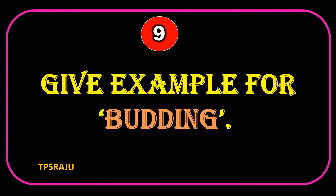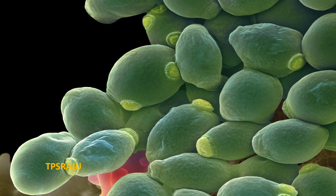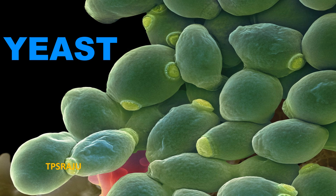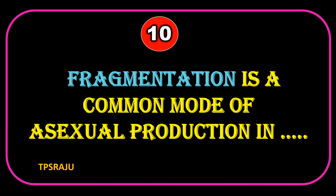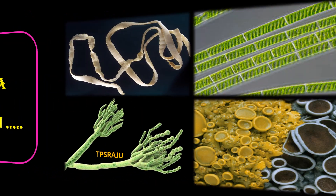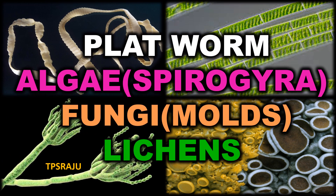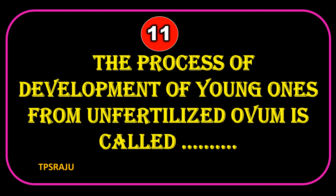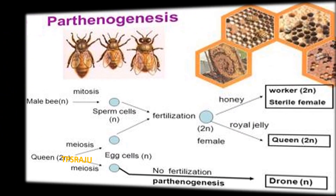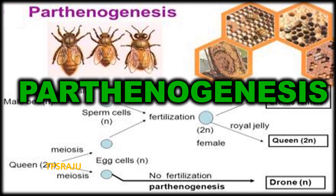Give an example for budding. Yeast. Fragmentation is a common mode of asexual reproduction. The process of development of young ones from unfertilized ovum is called parthenogenesis.